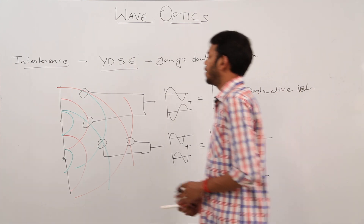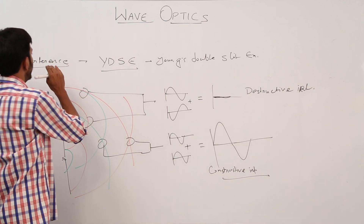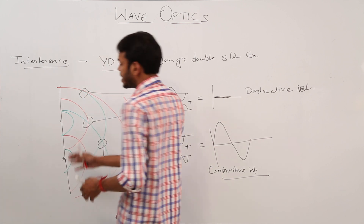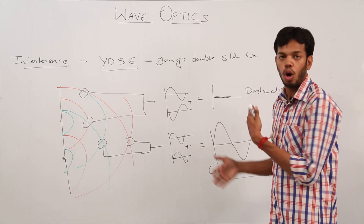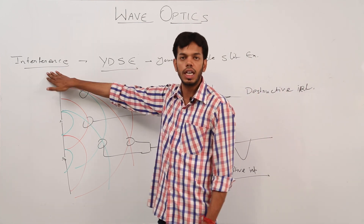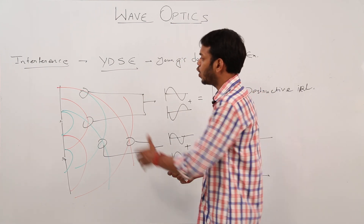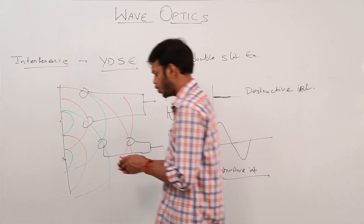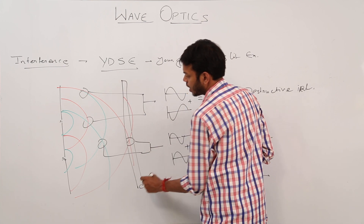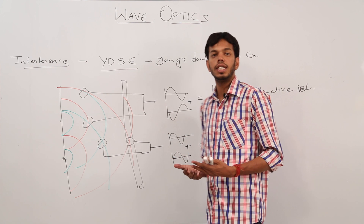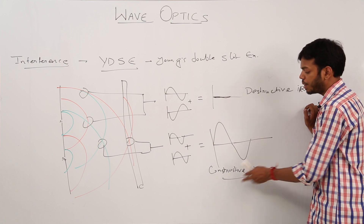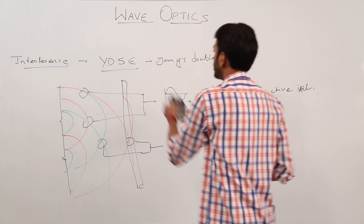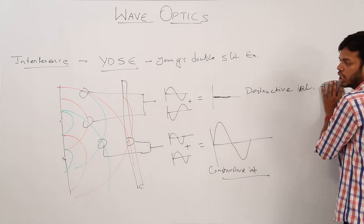Now, one more thing. Interference is the phenomenon of redistribution of light energy. Young's Double Slit Experiment is an experimental setup through which we can study how wave fronts are added or subtracted. We can study what pattern is formed on a screen, and we can also give conditions for when we get only destructive or only constructive interference. We will do this experiment in detail.